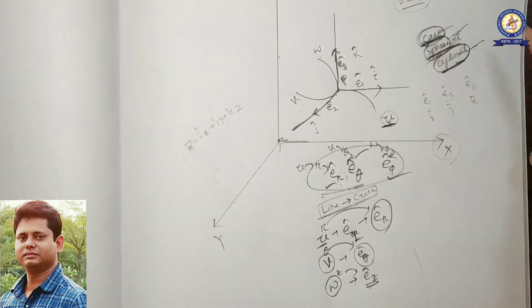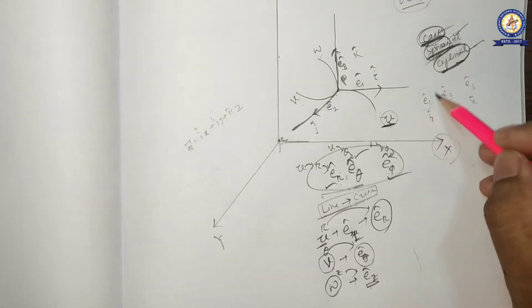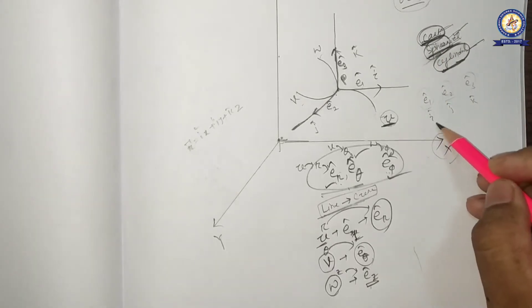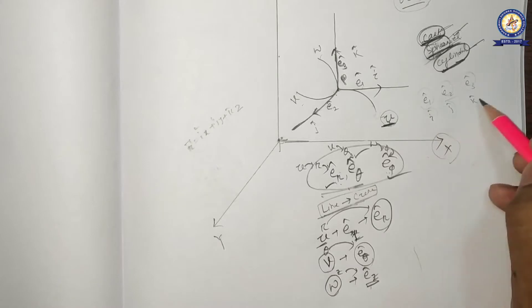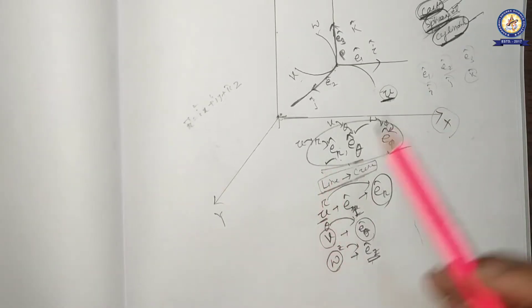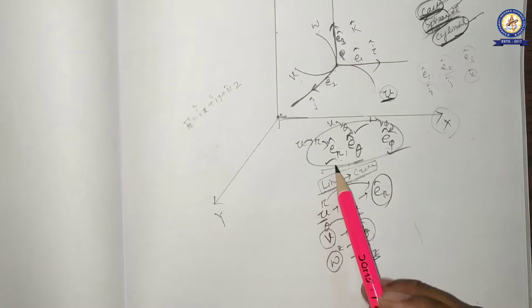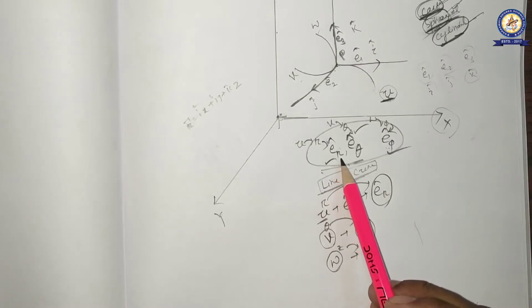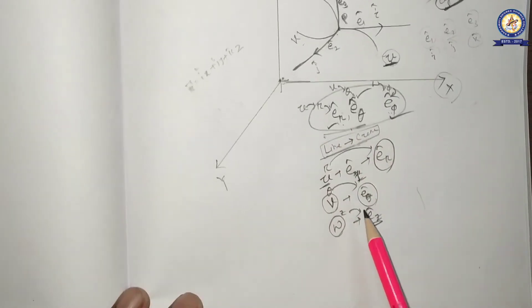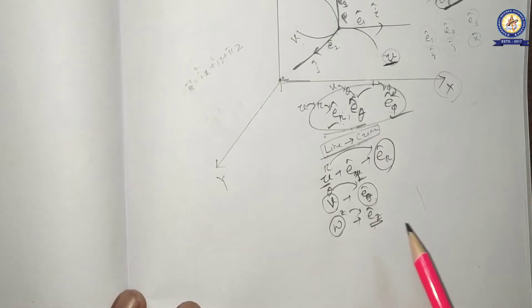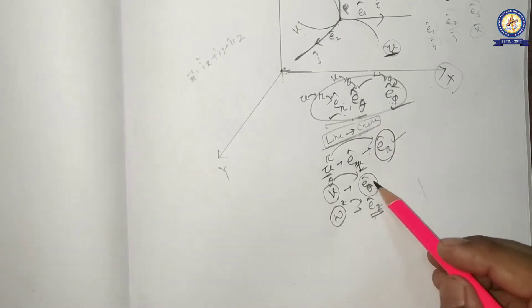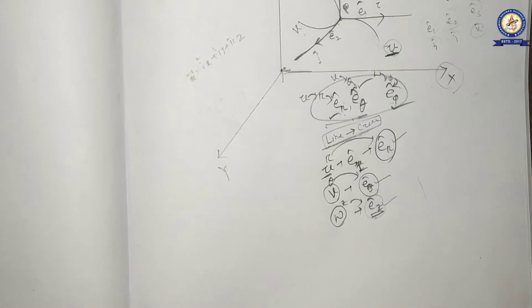In the case of the Cartesian coordinate system, the unit vectors e1 cap, e2 cap, e3 cap will be i cap, j cap, k cap. In the case of polar or spherical polar coordinate system, the unit vectors are e_r cap, e_theta cap, e_phi cap. In the case of the cylindrical coordinate system, the unit vectors are e_r cap, e_theta cap, e_z cap.